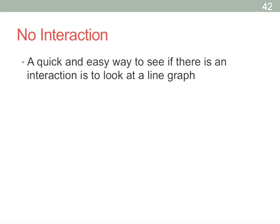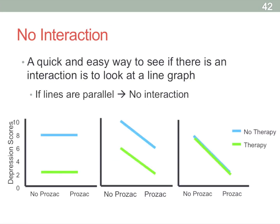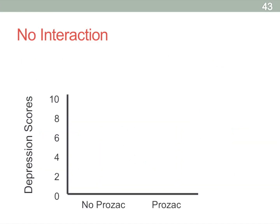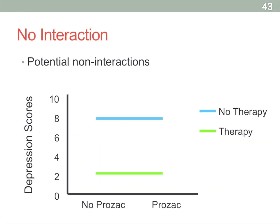It's easy to tell whether there's an interaction just by looking at line graphs. If the lines are parallel to each other, there's never an interaction. For example, if two differently colored lines have a big separation but are parallel and horizontal, there's a big main effect of therapy but no effect of medication. If the lines are parallel but slanted, you'd see an effect of medication. Parallel lines always mean no interaction.